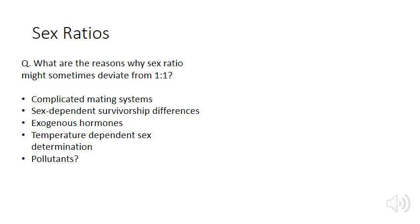There are many examples of populations where the sex ratio is not one to one. This can result from a variety of factors: complicated mating systems, differences in survivorship between males and females, exogenous hormones, temperature-dependent sex determination, and pollutants.